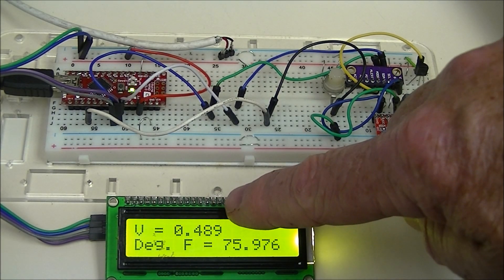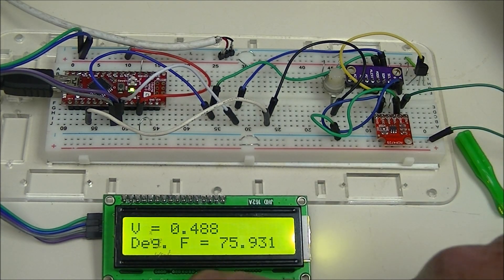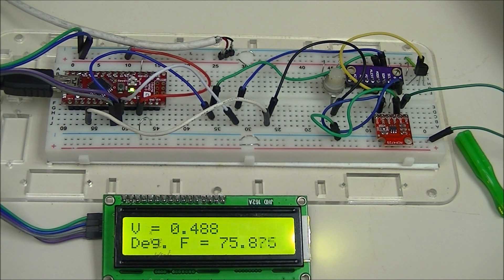Displayed here at the top is the sensor voltage, and down here is the conversion to Fahrenheit, that's the temperature in the room here.